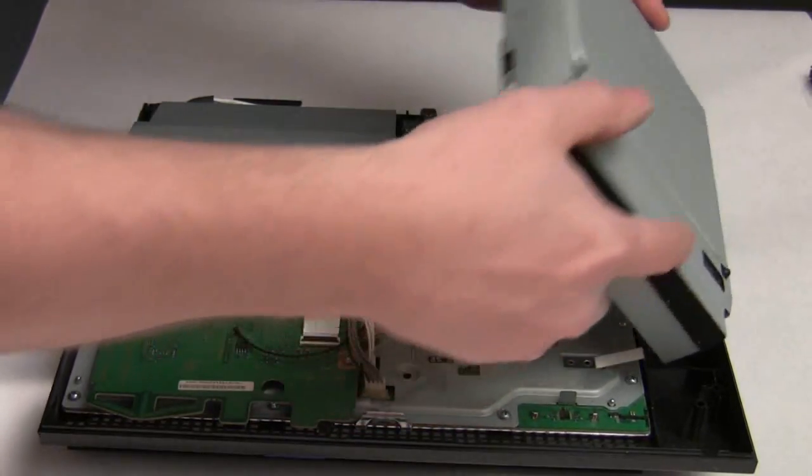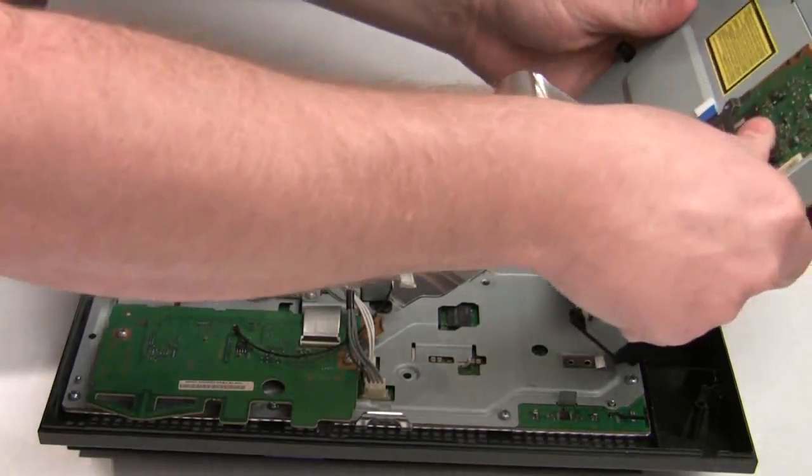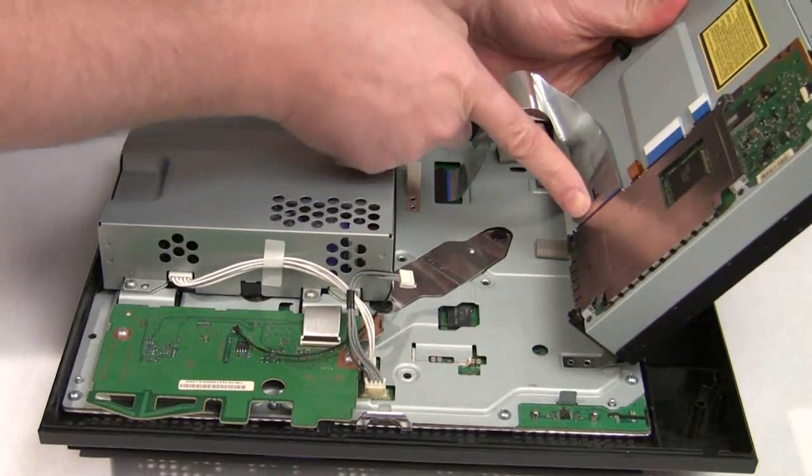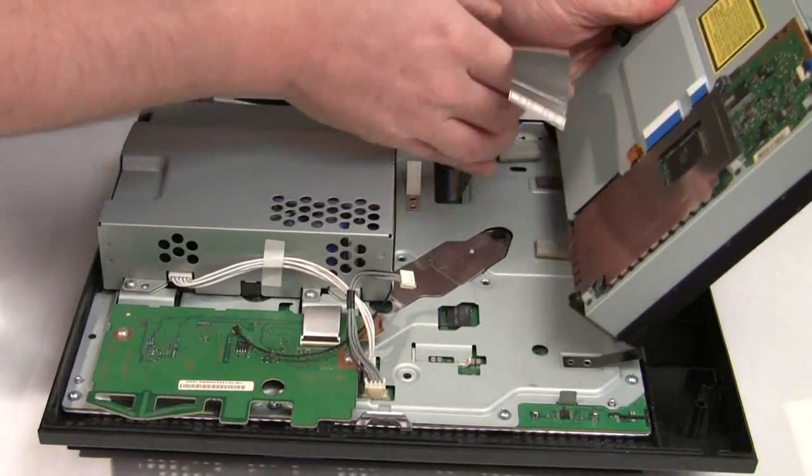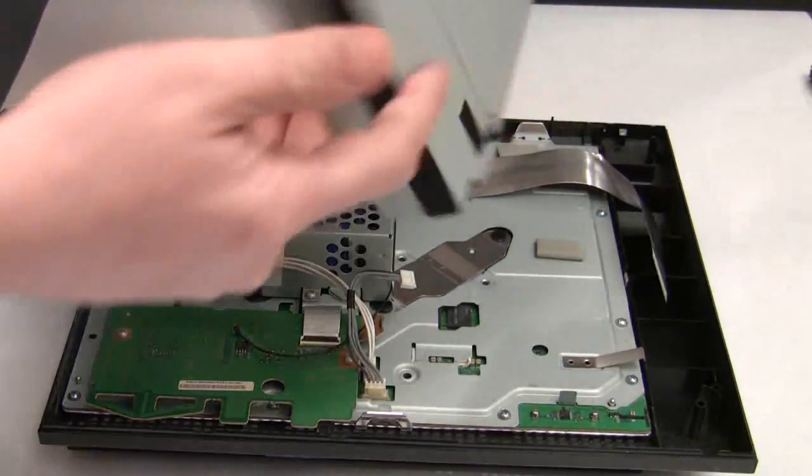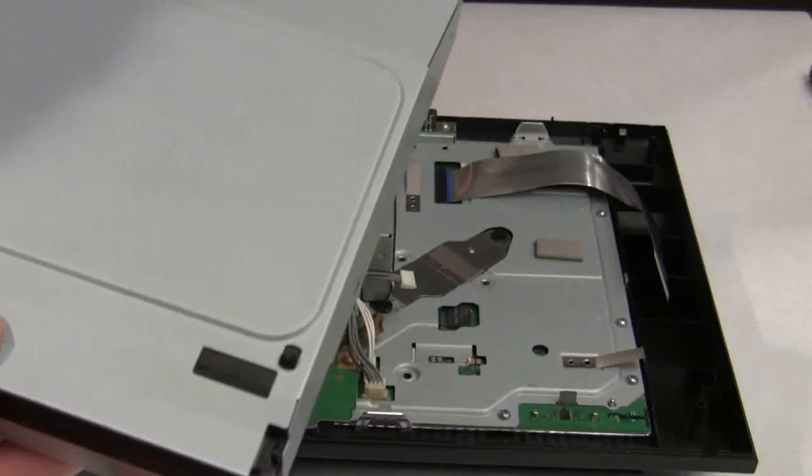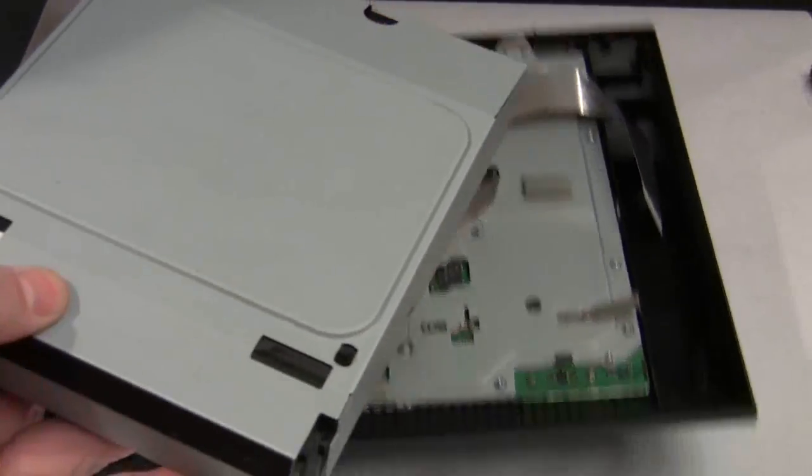Flip it over, and you'll see that there's a ribbon cable. All you gotta do is flip the little black latch and pull the cable out. Now, you can put the rest of the PlayStation 3 off to the side.